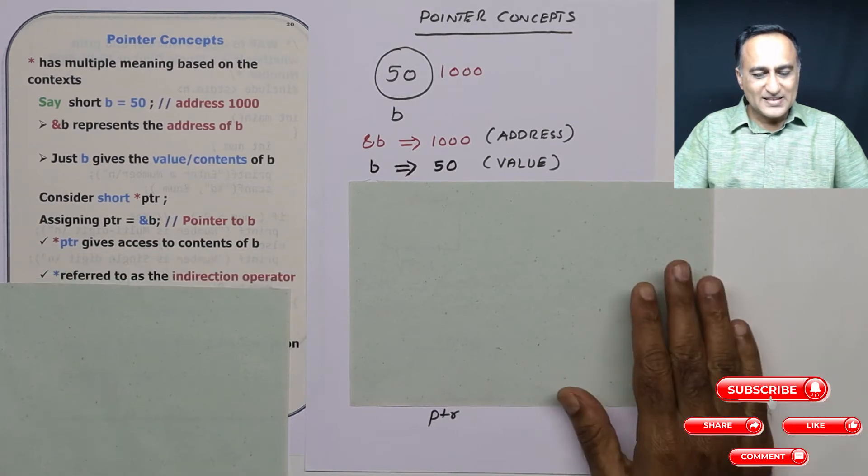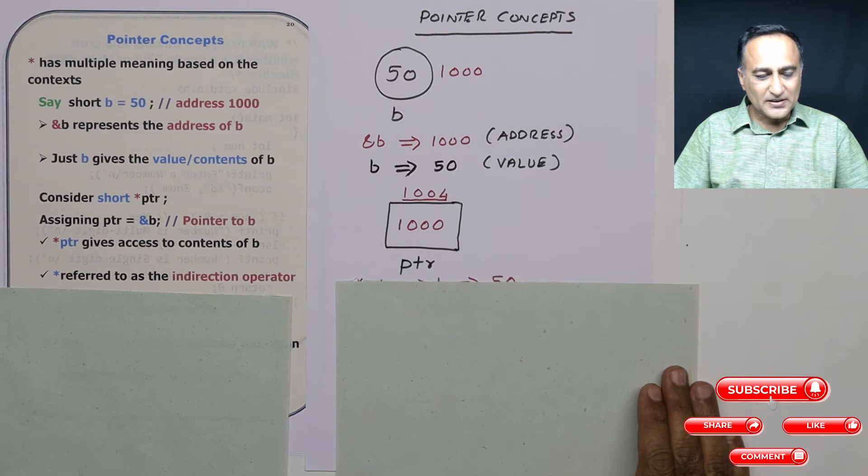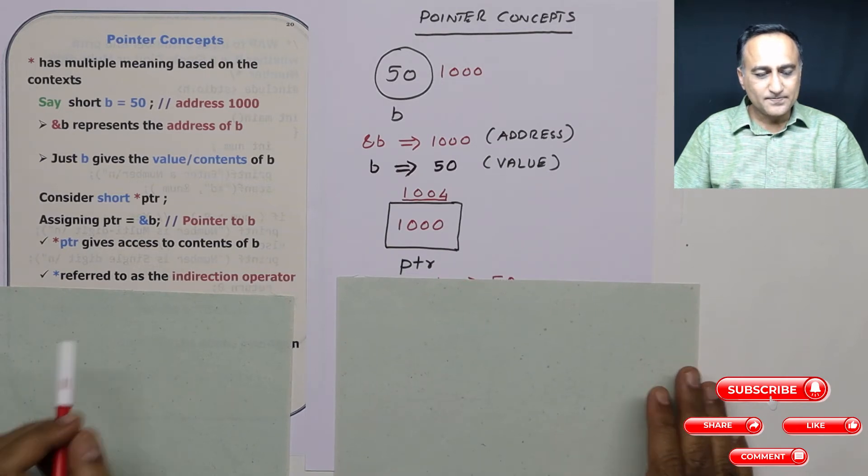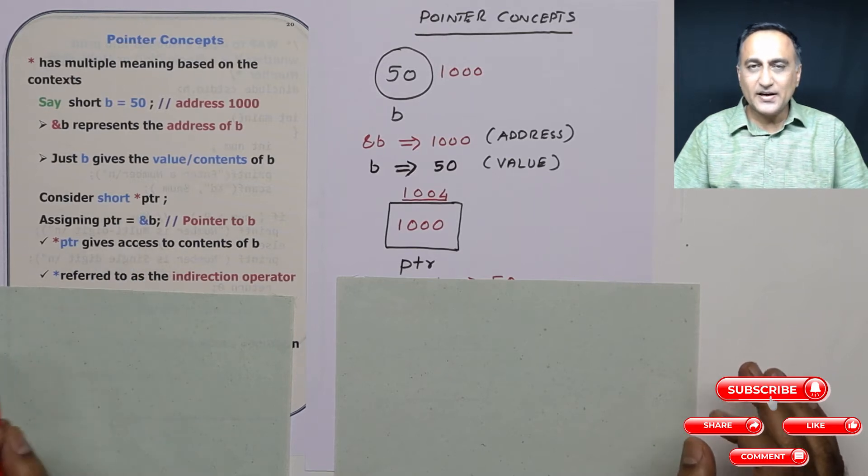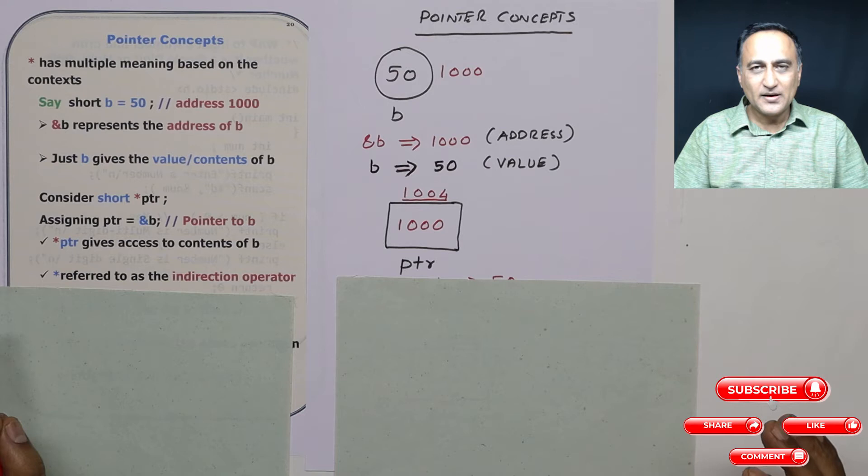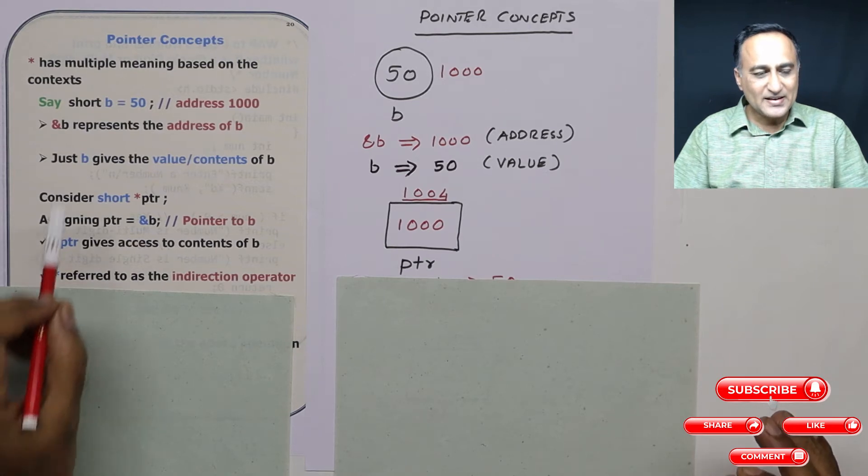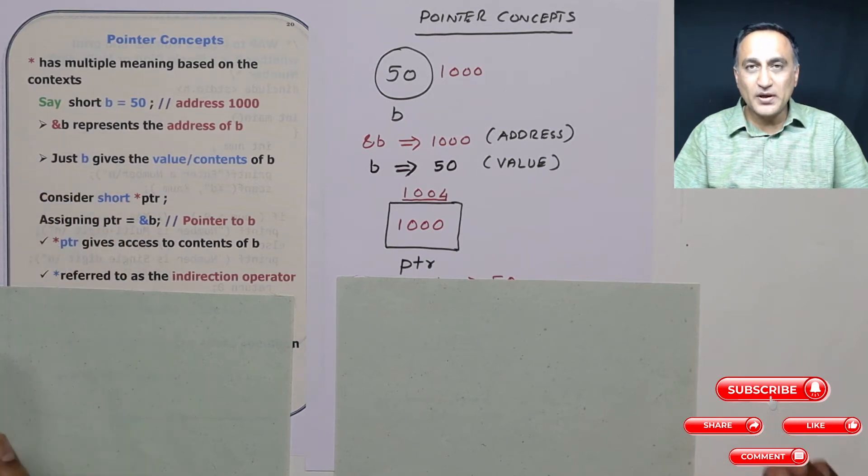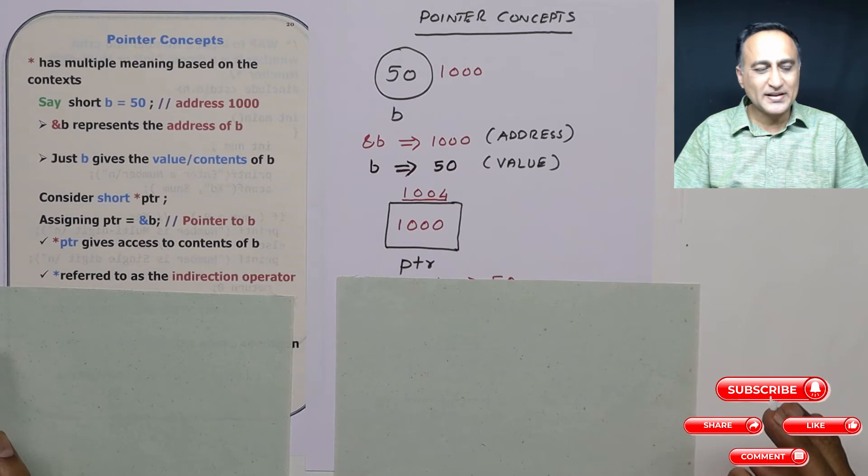Now let us assume I declare a pointer of the type short. So I say short star ptr. This indicates that ptr is also a variable, except that it's a special type of variable where it can contain the addresses of short type of variables only. It cannot hold the addresses of int, float, double and so on. In the next few minutes you will know why that is the case.